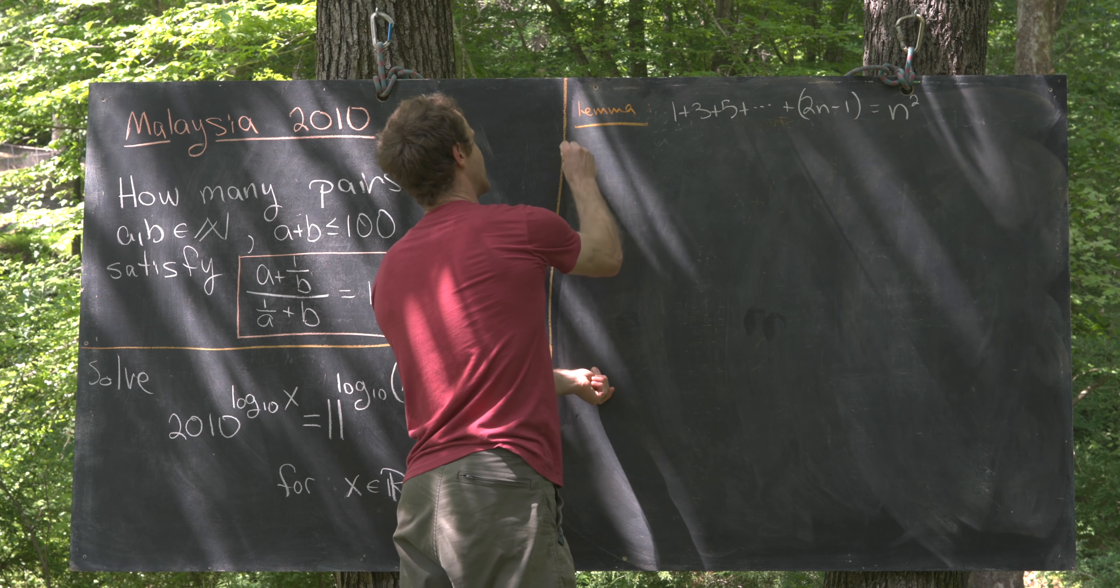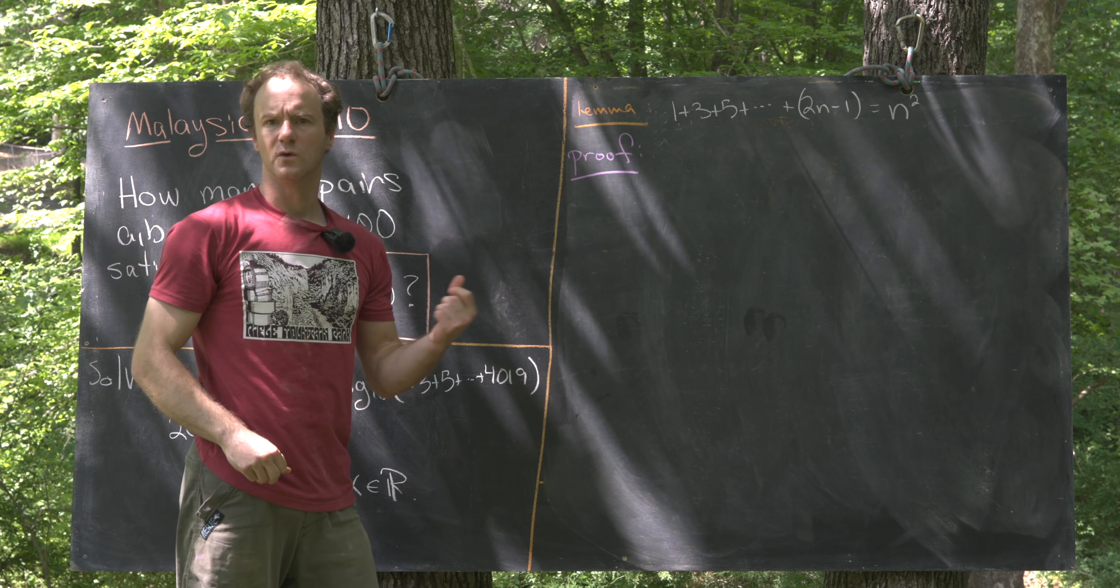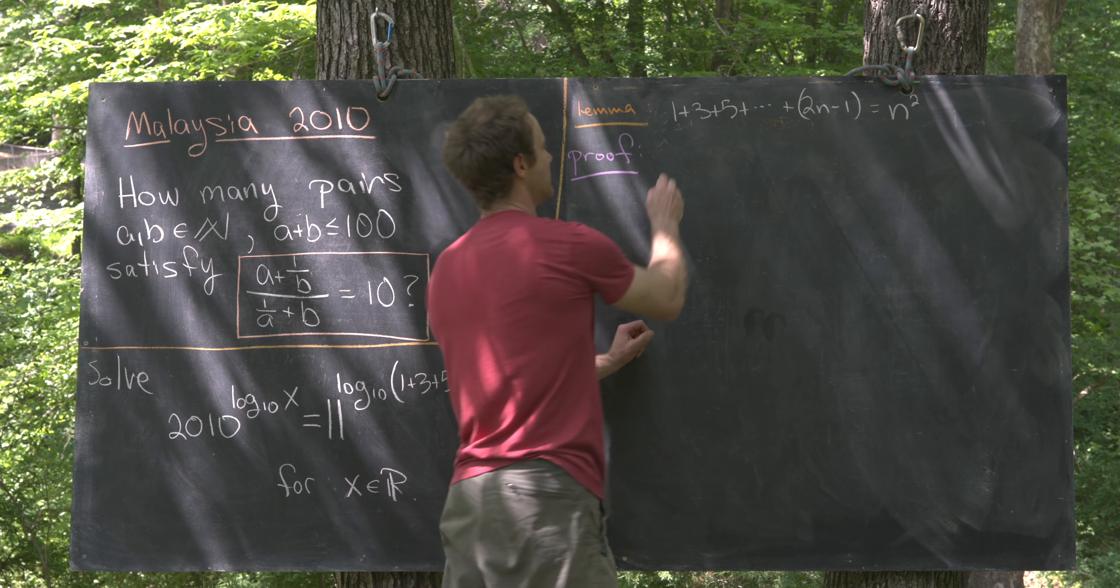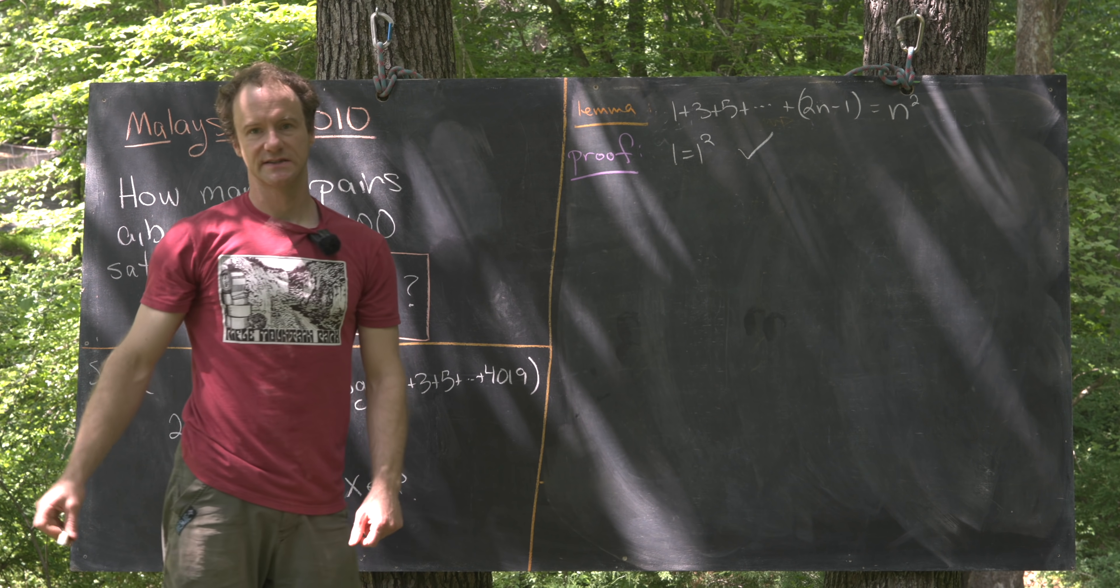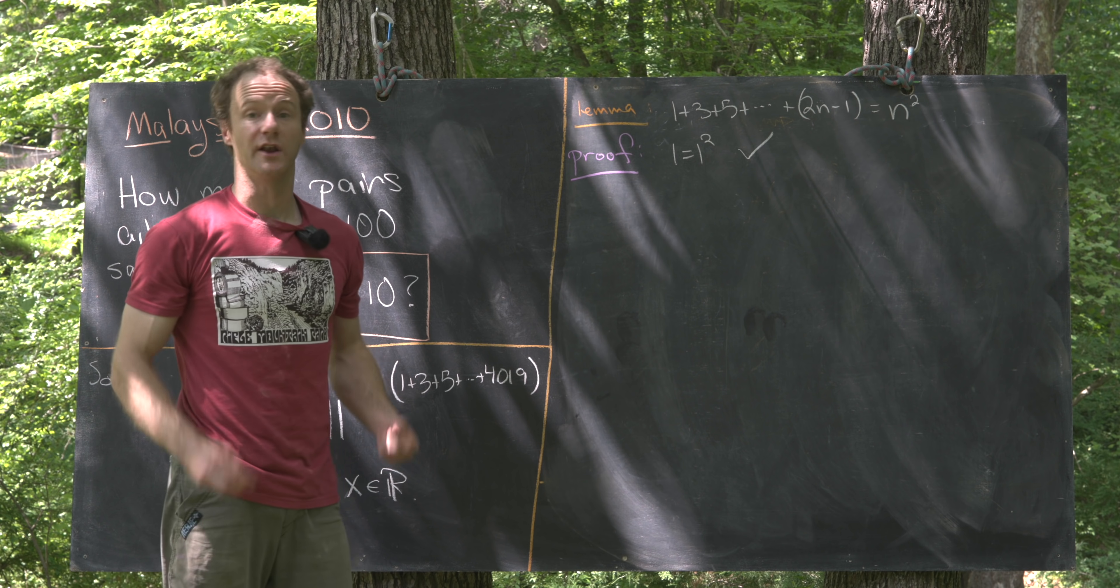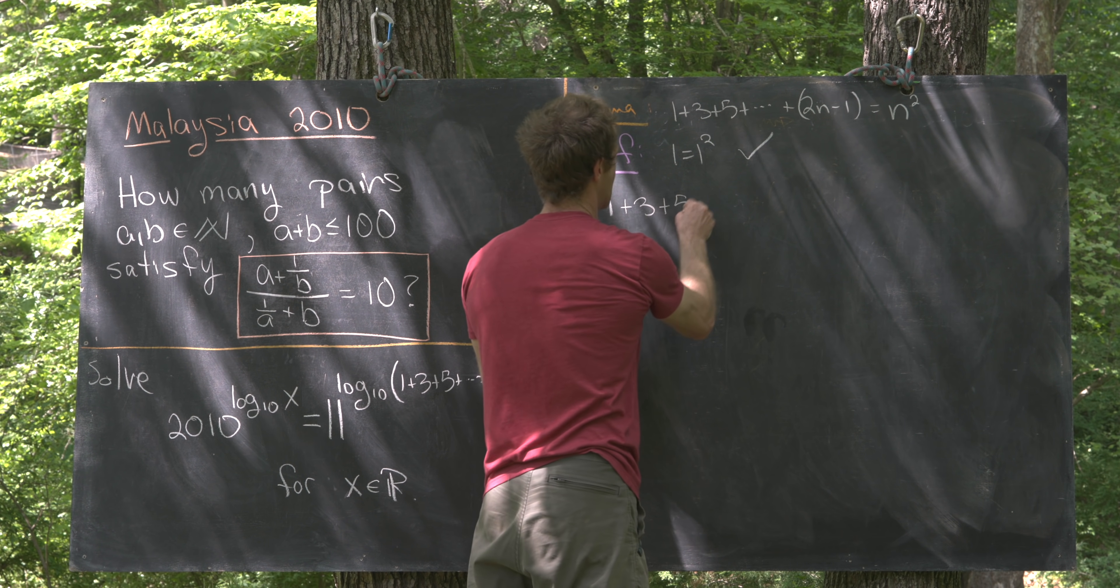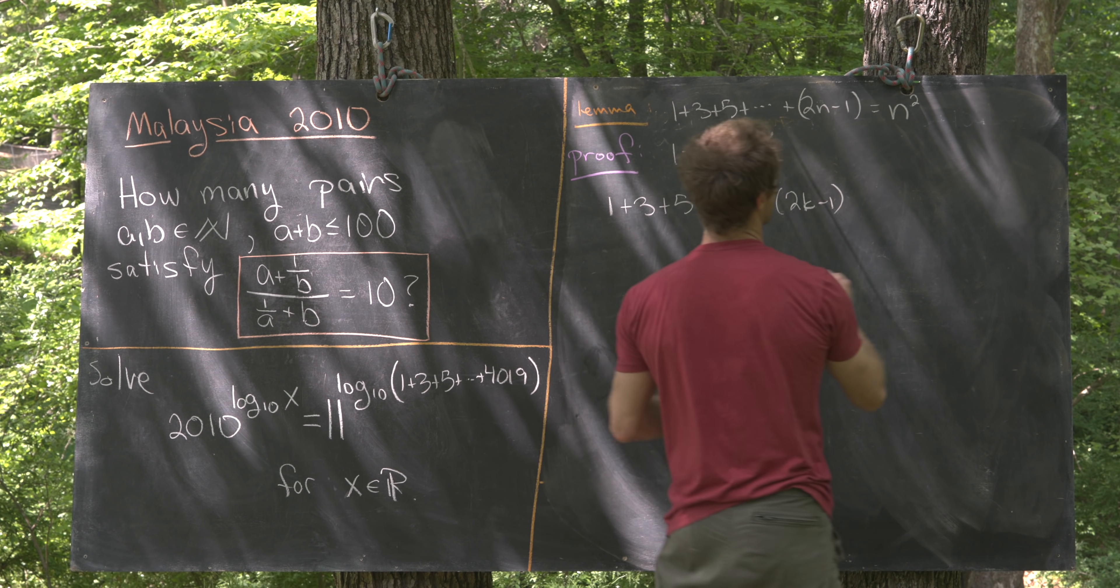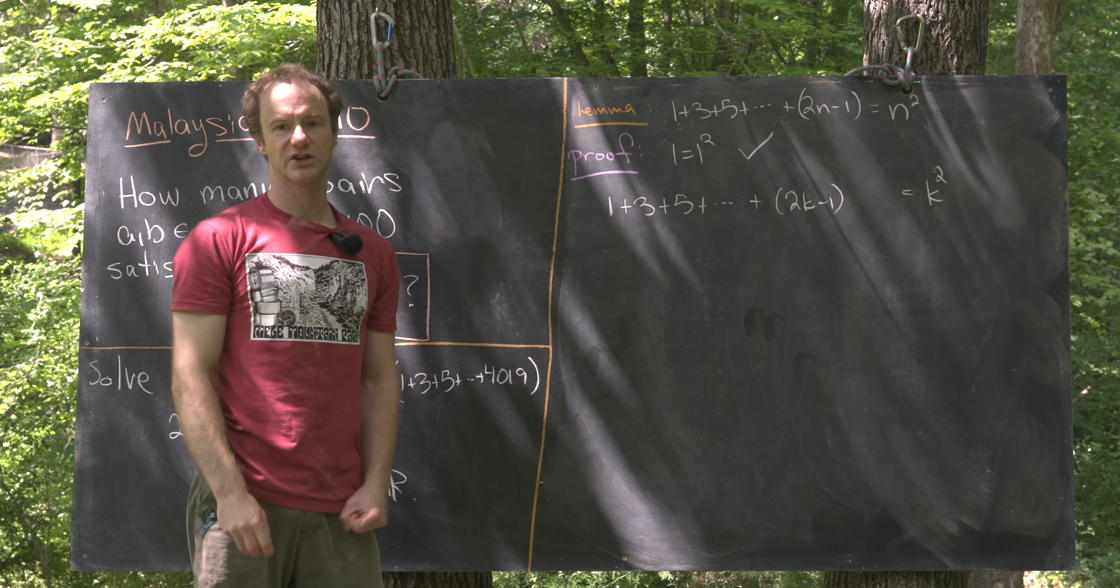Again, like I said, we're not doing a thorough proof, but we will wave our hands at one. So we'll consider this by induction. So our base case would be n equals 1, but notice 1 is equal to 1 squared, so we're okay in that case. And then by an induction hypothesis, we would suppose this is true for an arbitrary k bigger than or equal to 1. In other words, we have 1 plus 3 plus 5 plus all the way up to 2k minus 1 is equal to k squared. So that's our induction hypothesis.